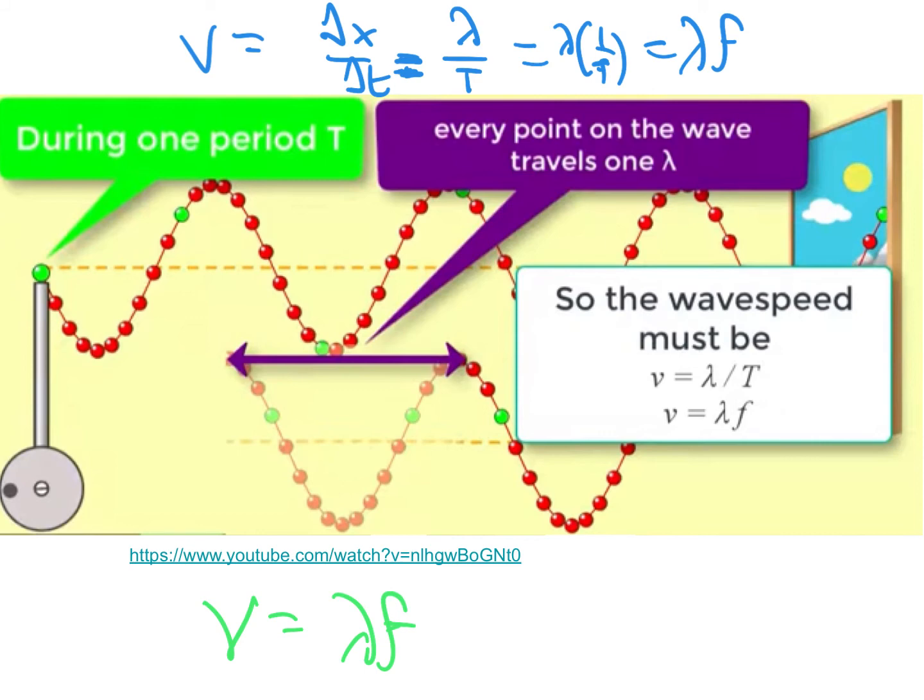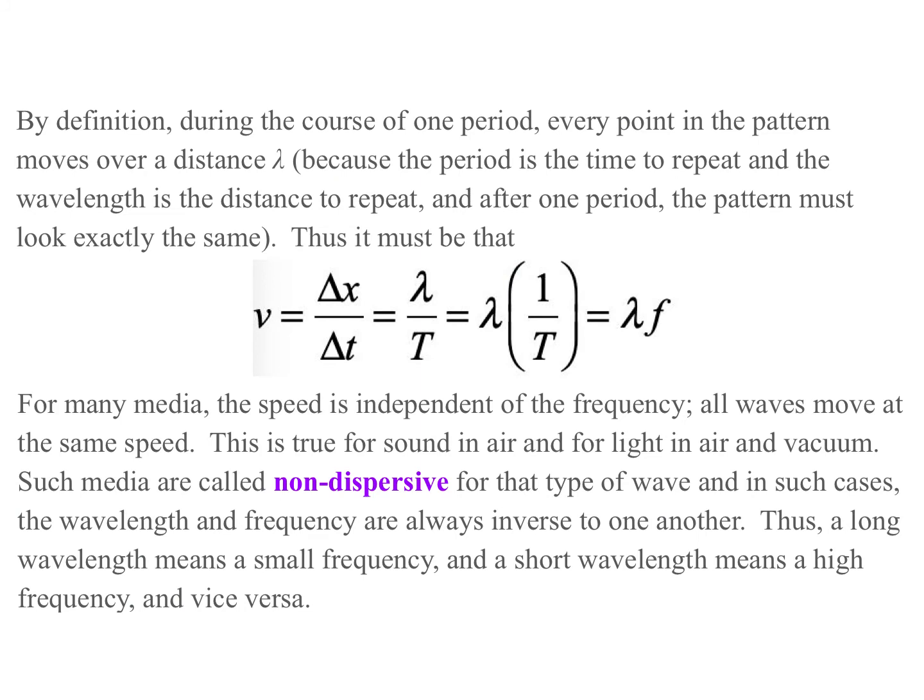But I like to fall back and want you to understand that this is nothing deep, this is just saying a velocity is a distance over a time. And in this case, the distance is lambda during the time one period T. All right, just to sum that up again.